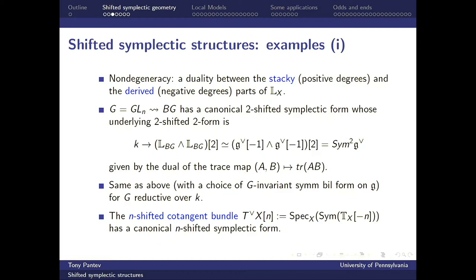For instance, if you take GL_N or any reductive group, the classifying stack BG will have a canonical two-shifted symplectic structure, corresponding to invariant quadratic polynomials on the Lie algebra. We have non-degenerate bilinear pairings on the Lie algebra of a reductive group: for GL_N it's just the usual Killing form, and those turn out to be closed — a truly two-shifted symplectic structure. In fact, the space of keys in this case is trivial, so there is no ambiguity in choosing the closed form.